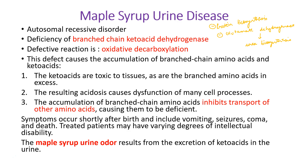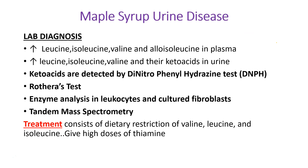To diagnose this condition, we measure the serum and urine values of the branched-chain amino acids and their keto acids. In the plasma, in addition to elevated levels of branched-chain amino acids, we will also see elevated levels of allo-isoleucine. The keto acids are detected by the DNPH test, which is dinitrophenylhydrazine test. Rothera's test may be done and enzyme analysis in leukocytes and cultured fibroblasts is very specific for detection of the disease. Treatment consists of dietary restriction of valine, leucine, and isoleucine, and some patients respond to high doses of thiamine. In severe cases, liver transplantation may be required.